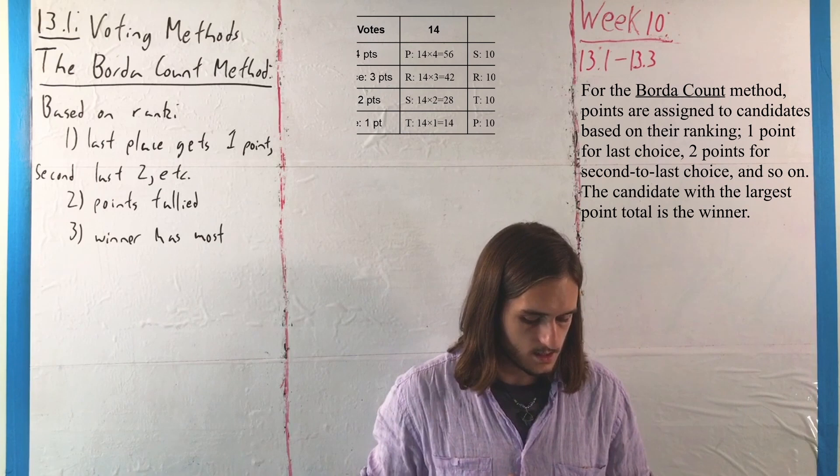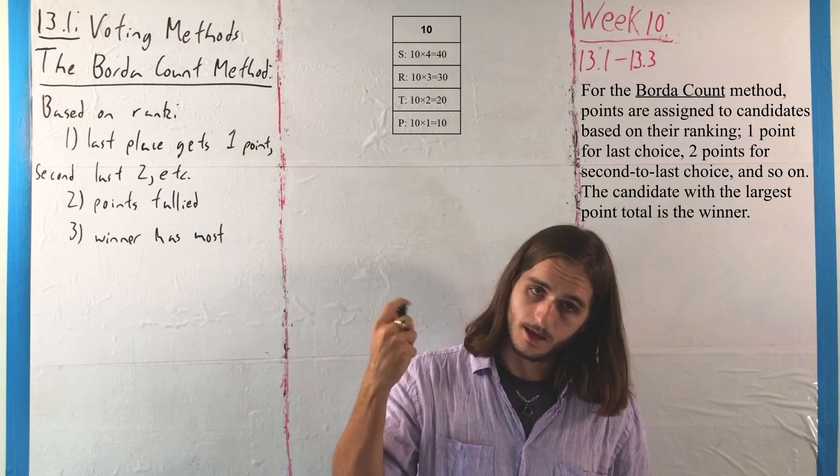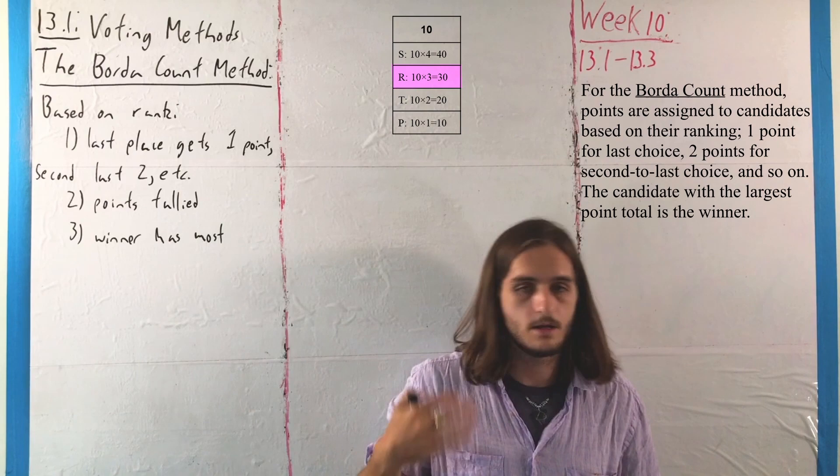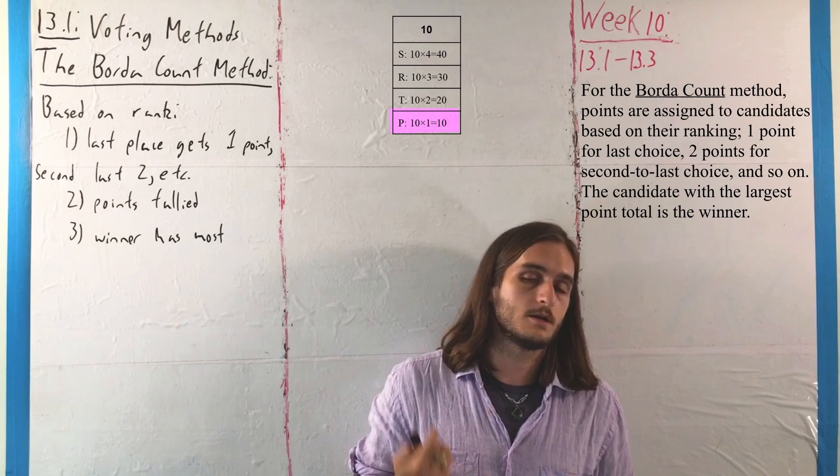For the 10 ballots that had St. Petersburg, then Rome, Tallinn, and Paris: St. Petersburg would get 4 × 10 = 40 points. Rome would get 3 × 10 = 30 points. Tallinn gets 2 × 10 = 20 points, and Paris just gets 1 × 10 = 10 points there, because all 10 of those ballots had it as the least interesting option.